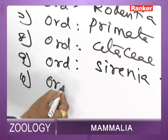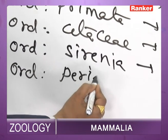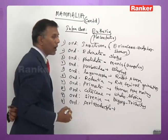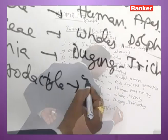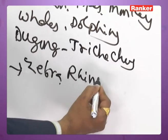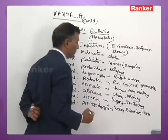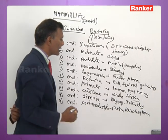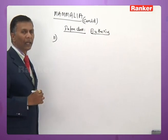Order Perissodactyla — commonly called odd-toed ungulates — includes zebra, rhinoceros, and horse.